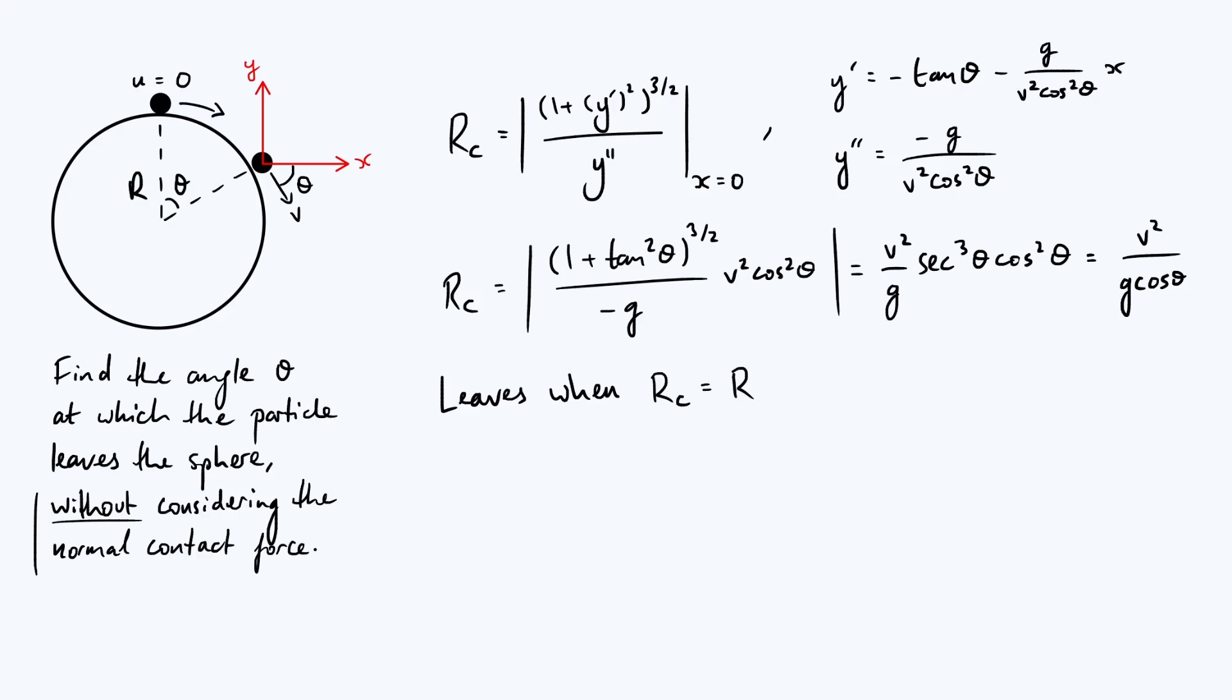This radius of curvature is continuously increasing and there'll come a point when the radius of curvature equals r, the radius of the sphere itself. At that point, if you visualize what that trajectory would look like, it would no longer be trying to move into the sphere or push into it, so it's going to lose contact at that position. All we have to do is take v squared over g cos theta and set that equal to r. We get a condition: it leaves when v squared equals g r cos theta.